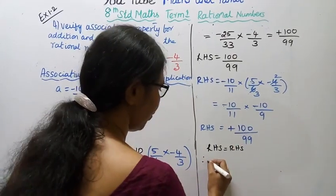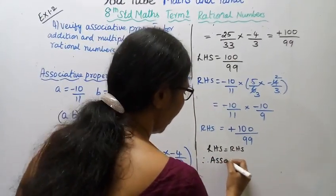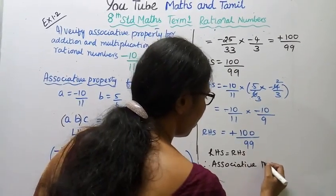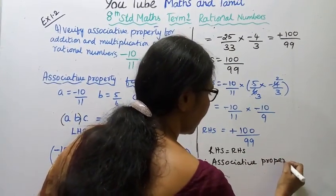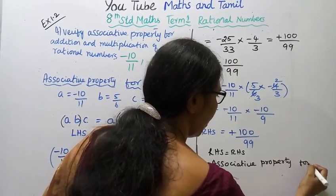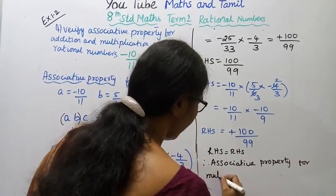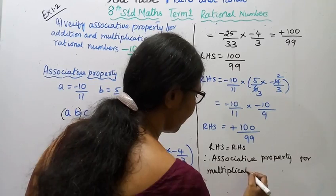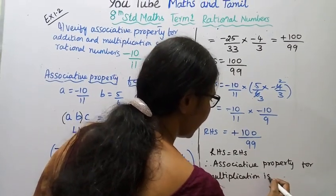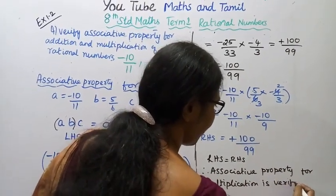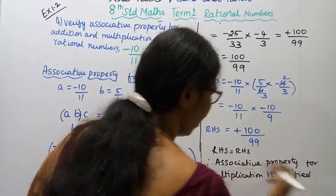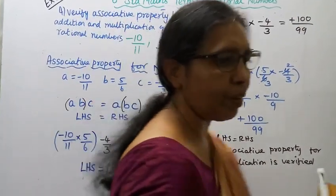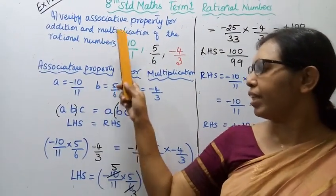Therefore, left hand side equal to right hand side. Associative property for multiplication is verified.